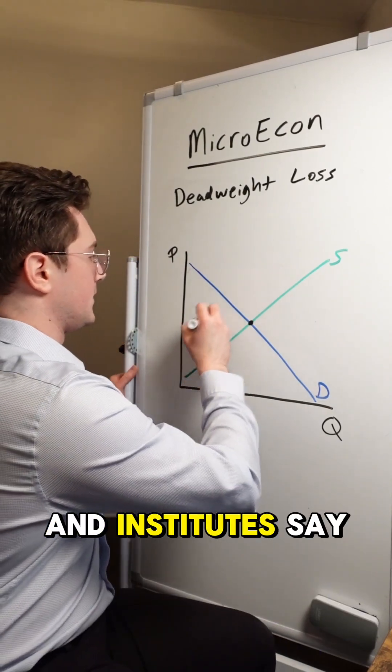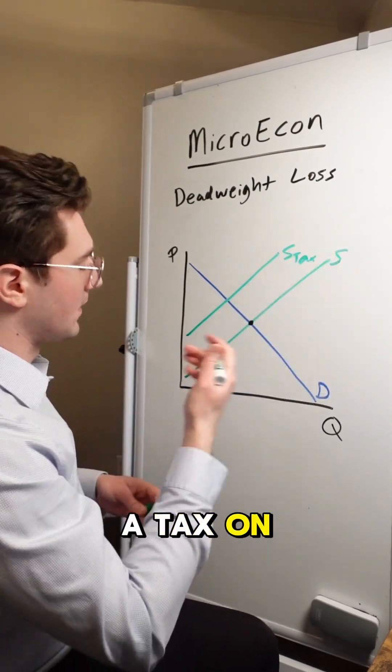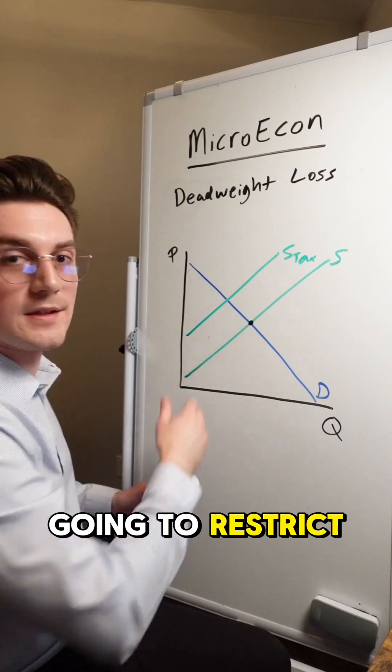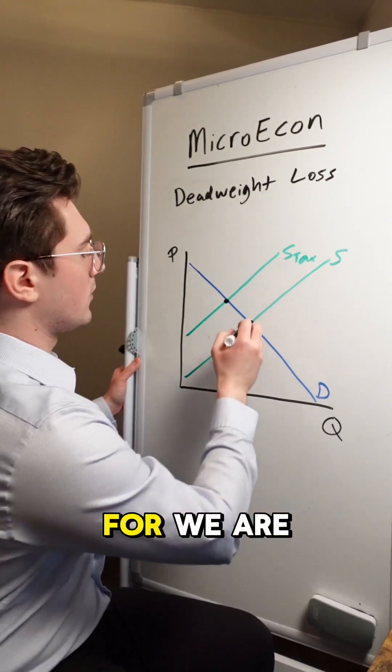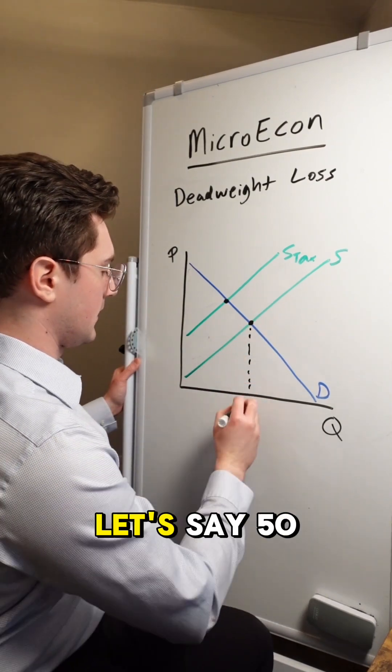But when the government comes in and institutes, say, a tax on the market, it's going to restrict our equilibrium quantity. Before, we were operating at this quantity right here, let's say 50 units.